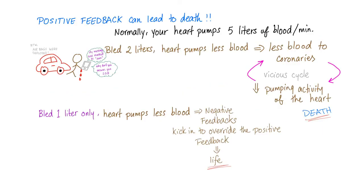Negative feedback is cool, but positive feedback can sometimes lead to death. Normally you have 5 liters being pumped by your heart every minute. Let's say you got hit by a car and bled 2 liters. Your heart pumps 3 liters instead of 5, leading to less blood going to the coronary arteries which feed the heart itself. This leads to decreased pumping activity, less blood to the coronaries — a vicious cycle until you die. So stop texting while crossing the street.